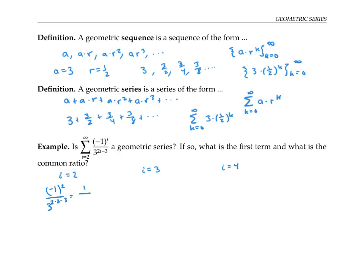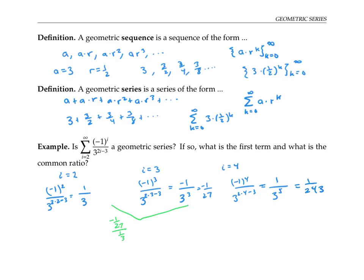If I write out the first few terms, notice that we start with i equals two. Plugging in i equals two, I get negative one squared over three to the two times two minus three, that's one over three. If I plug in i equals three, I get negative one cubed over three to the two times three minus three, or negative one over three cubed, negative one twenty-seventh. When i equals four, I get one over 243. Looking at the ratio of consecutive terms, negative one twenty-seventh divided by one third is negative one ninth. Similarly, the ratio here is also negative one ninth, suggesting a geometric series with ratio r of negative one ninth and first term of one third.